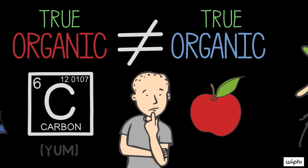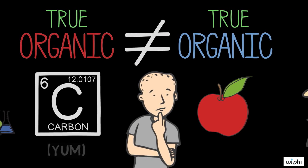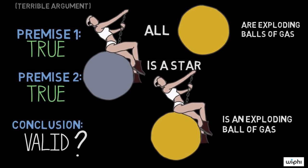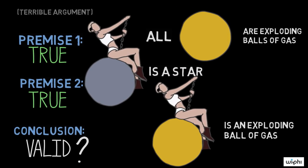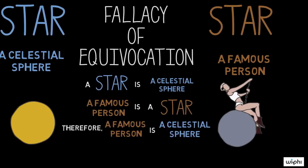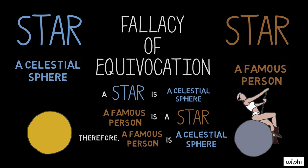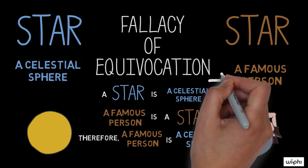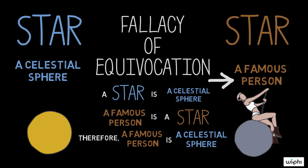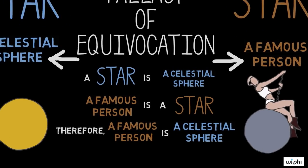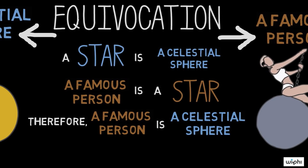If you're ever suspicious that an argument is guilty of equivocation, try the method we used in the first example of this video. First, distinguish the potential meanings of the ambiguous term in an argument. Then, restate the argument without the ambiguous term, so that the premises are still true.